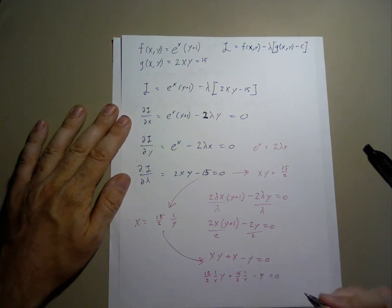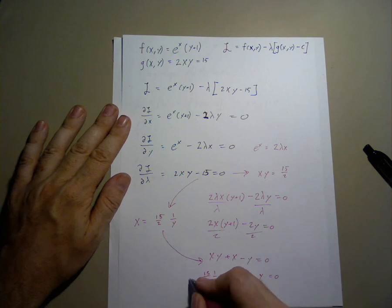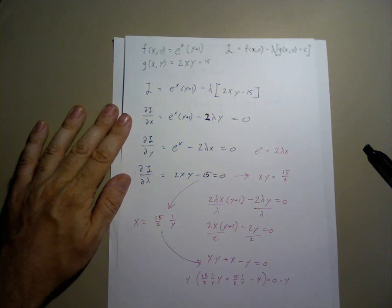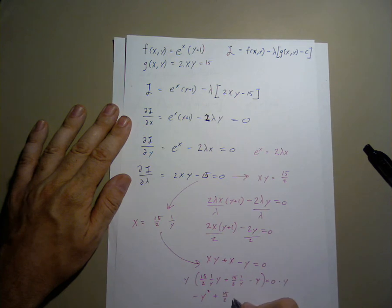This, as it is, is a difficult-to-solve problem. However, if we multiply both sides by y, we get the more solvable negative y squared. So, y squared plus 15 over 2 y plus 15 over 2 equals 0.